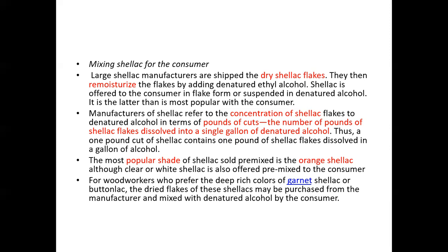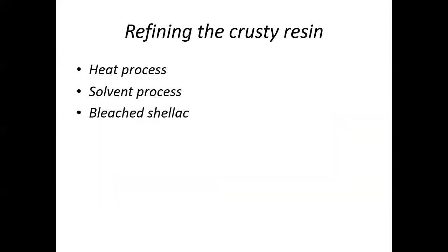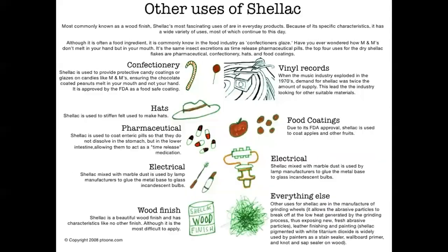For woodworkers who prefer the deep, rich color of garnet shellac or button lac, dried flakes may be purchased from the manufacturer and mixed with denatured alcohol by the consumer. Other uses include confectioneries, hats, pharmaceuticals, electrical applications, wood finishes, vinyl records, food coating, and more.